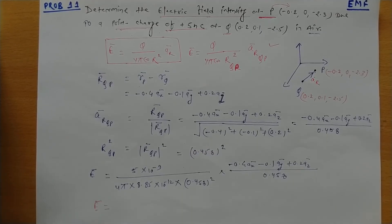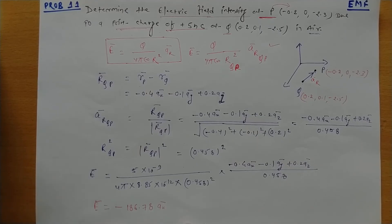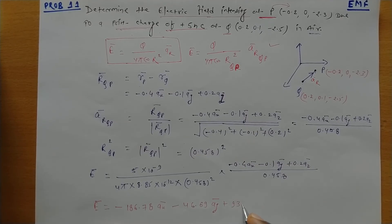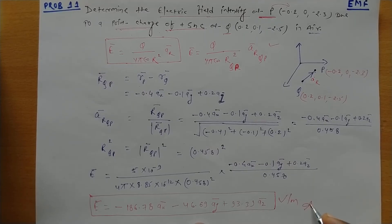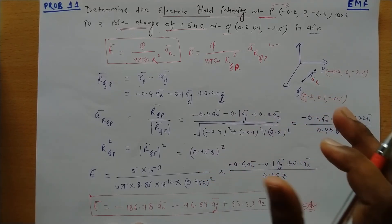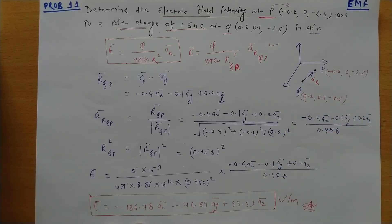The final answer: the electric field intensity is coming out to be -186.78 ax - 46.69 ay + 93.39 az. The unit of electric field intensity is volt per meter. So this is the answer — the electric field intensity at point P due to the point charge Q placed at (0.2, 0.1, -2.5). Thank you.